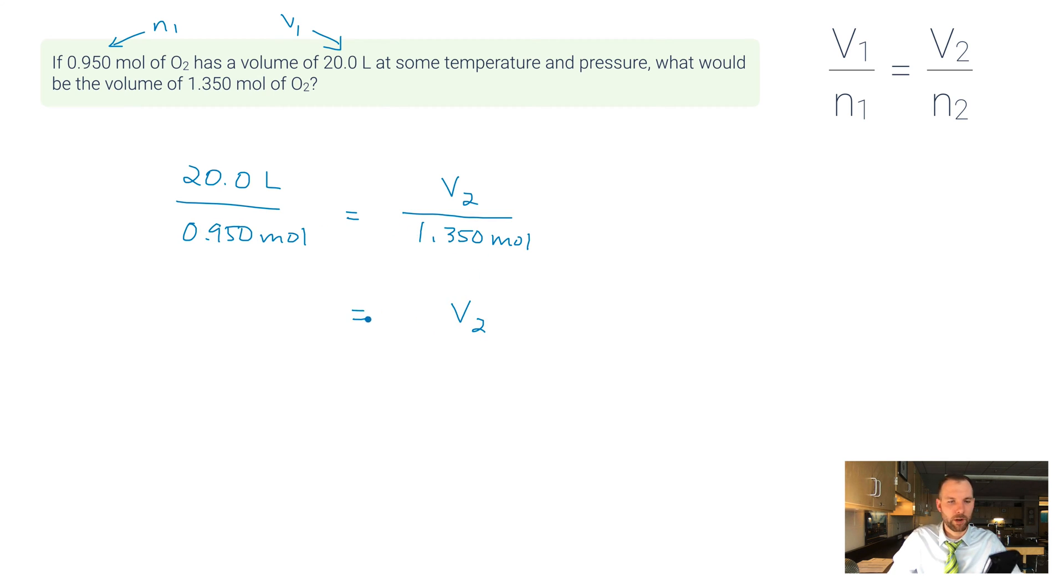That's going to be 28.4 liters. I want to match three significant figures—this has three sig figs, so does that, and this has four, so I want to go with the lowest amount always.